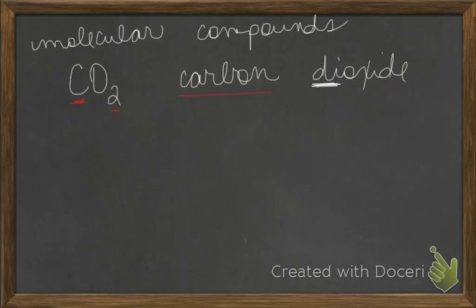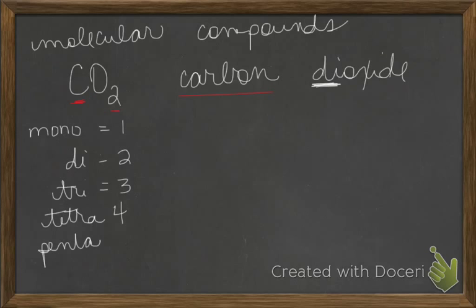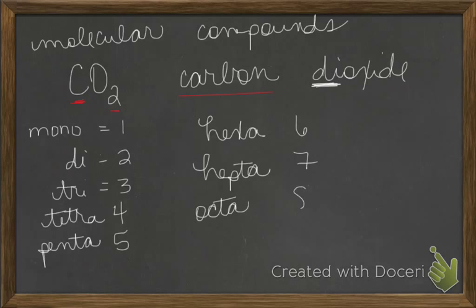Those prefixes are things like mono for one, di for two, three is tri, four is tetra, five is penta, six is hexa, seven is hepta, octa is eight, nona is nine, and deca is ten. And so those are the prefixes that you're going to put in front of the name of the element.